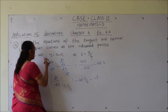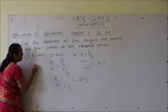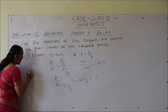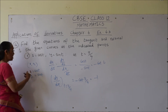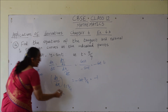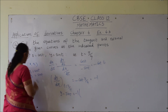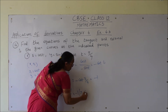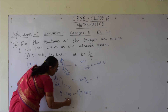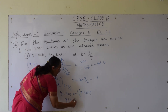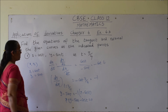Now for the equation of tangent: x1 is cos t and y1 is sin t, since these points lie on the curve. The equation of tangent is y minus sin t equals negative 1 times x minus cos t. Rearranging, the equation of tangent is x plus y minus sin t minus cos t equals 0.